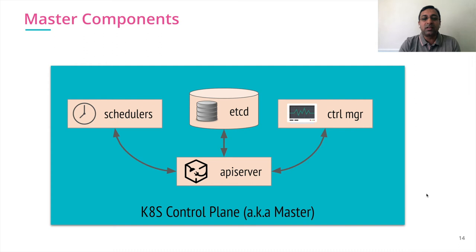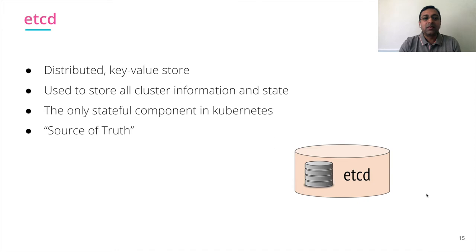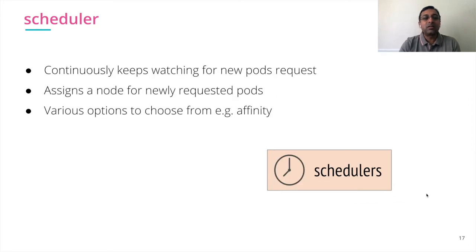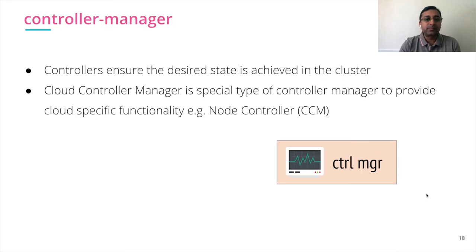Let's quickly recap the key components of the Kubernetes control plane. First, etcd is the distributed key-value store used to store all cluster information and state — the only stateful component in Kubernetes and the source of truth. The API server acts as the front end or face of the control plane; every communication happens via it, exposing REST API endpoints. The scheduler constantly looks for new pod requests and assigns nodes to newly requested pods using affinity information. The control manager ensures the desired state is achieved by constantly comparing desired and actual states.